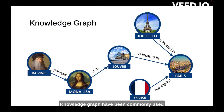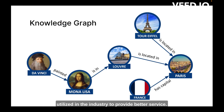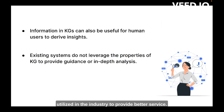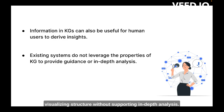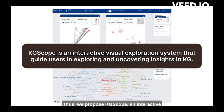Knowledge graphs have been commonly used to represent relationships between entities and have been utilized in the industry to provide better service. As knowledge graphs integrate data from a variety of sources, they can also be useful references for human users. However, prior systems concentrated on visualizing structure without supporting in-depth analysis. Thus, we propose KG Scope, an interactive visual exploration system that guides users in uncovering insights in knowledge graphs.